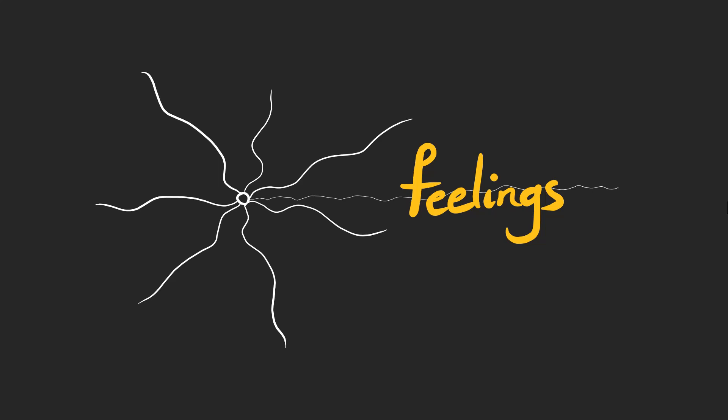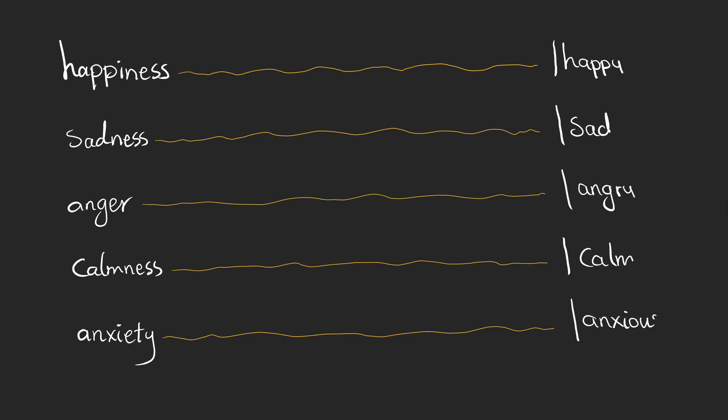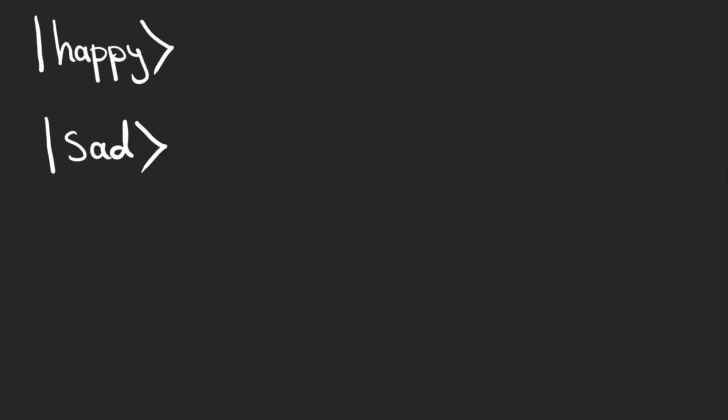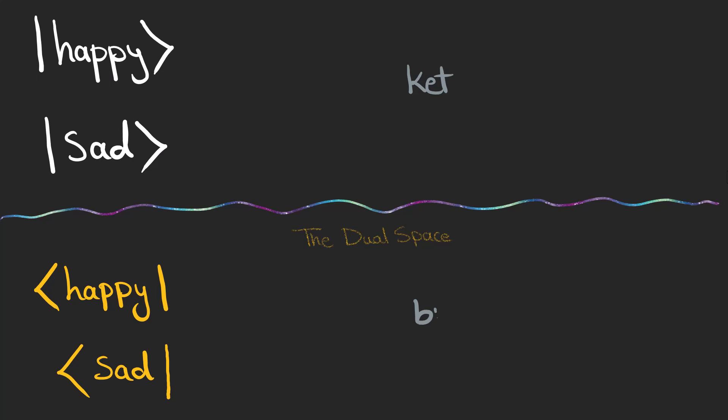Imagine for a moment that our emotions aren't just fleeting feelings but complex states. What if we could look at these feelings as just different states in a vast emotional universe? Each emotional state has a kind of twin version that lives in another space in this universe called the dual space. Let's call these cats and the twins bras.